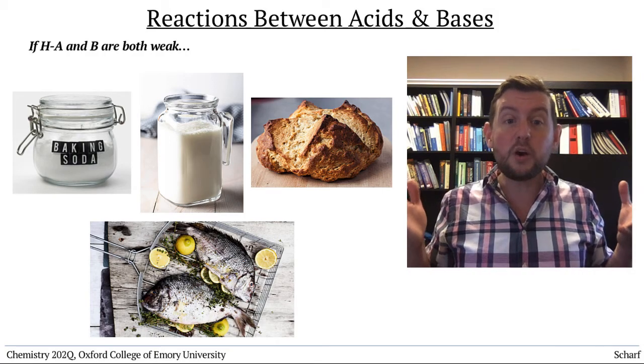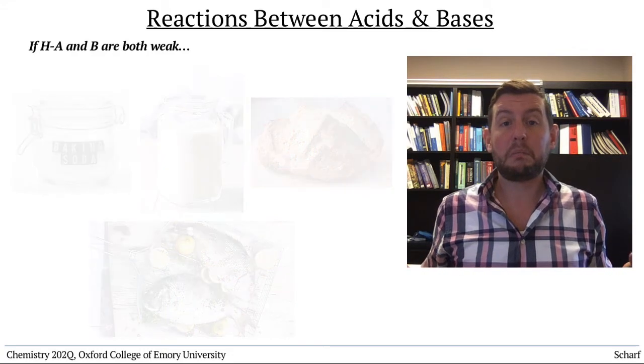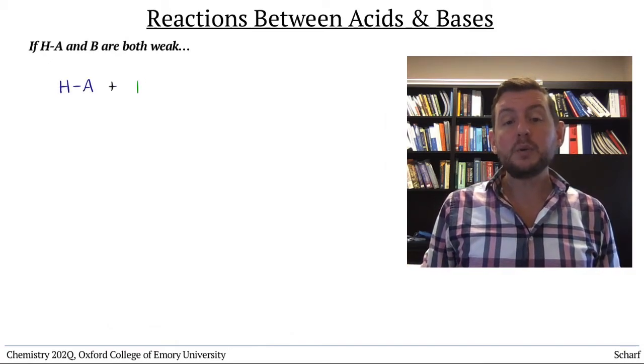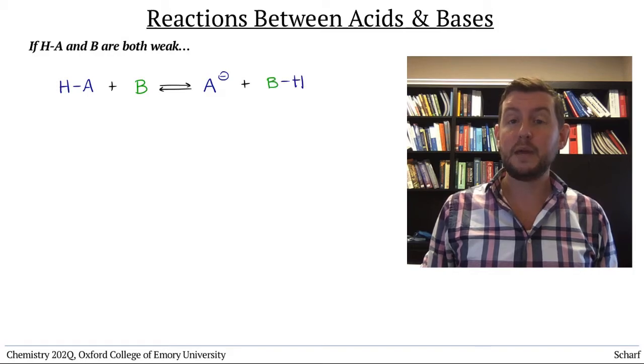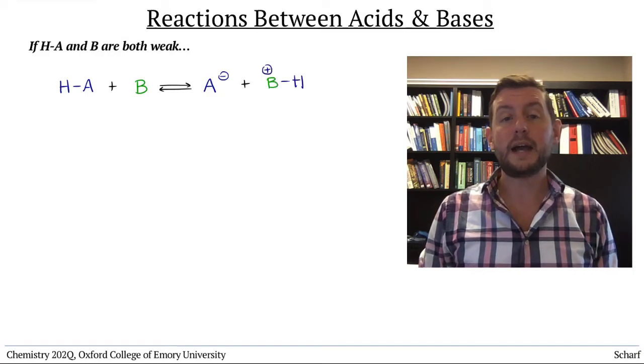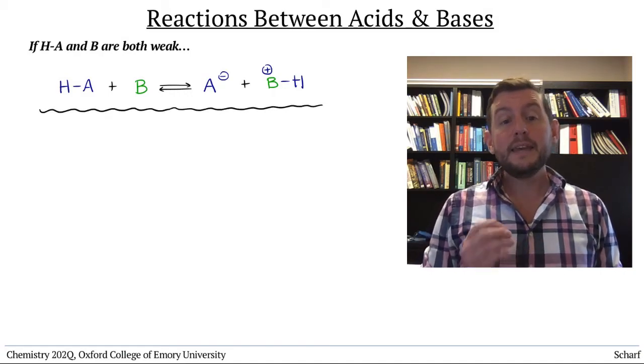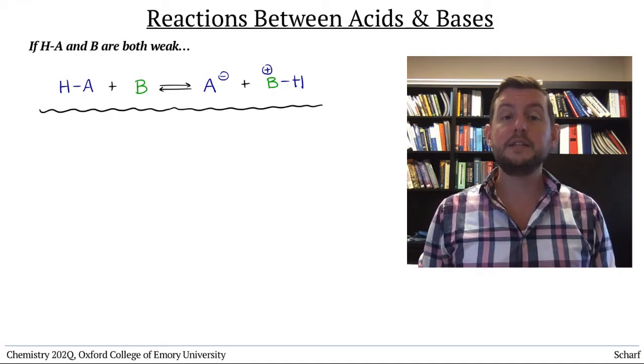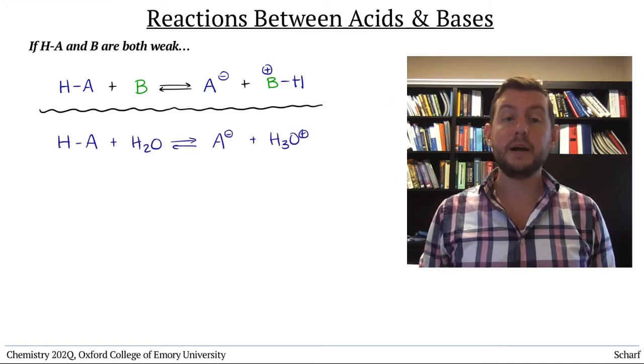How do we know whether, and to what extent, these reactions occur? To figure out the equilibrium constant for the generic reaction between an acid and a base, we can use a few reactions for which we do know the equilibrium constants. The acid's strength is defined by this reaction, and the base's strength is defined by this reaction.